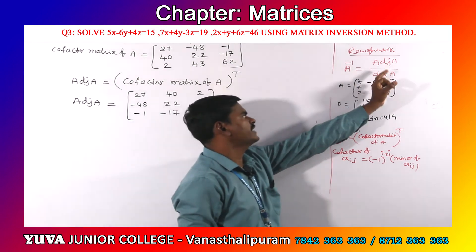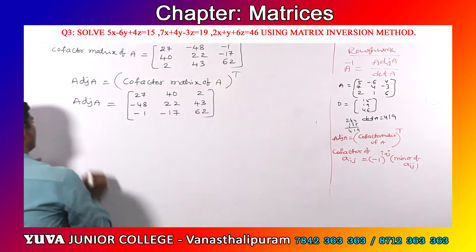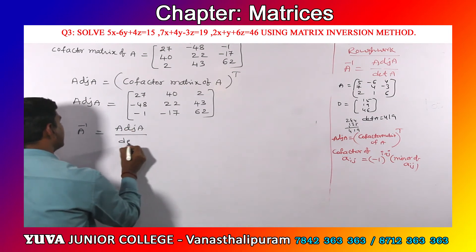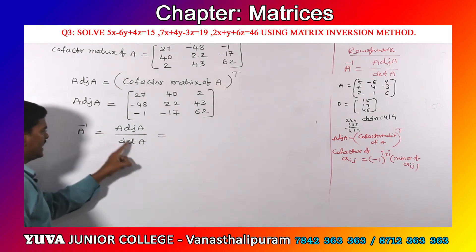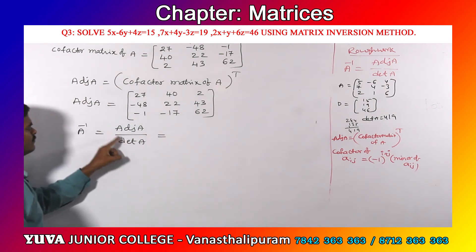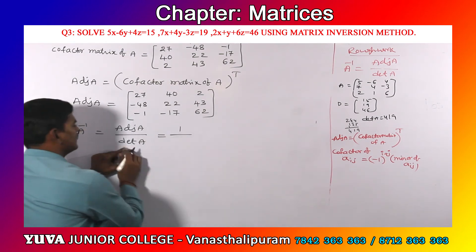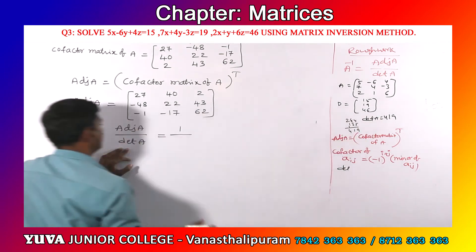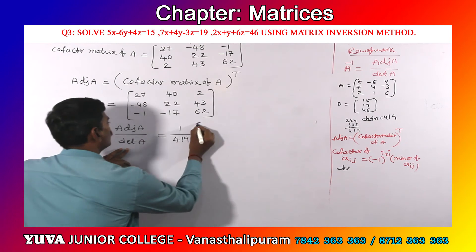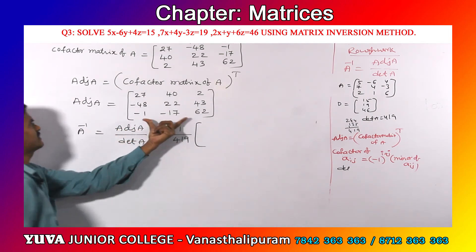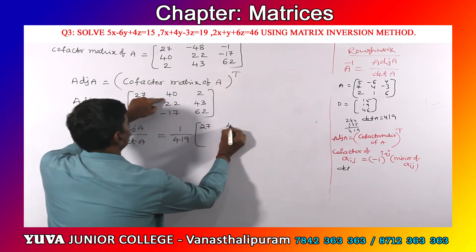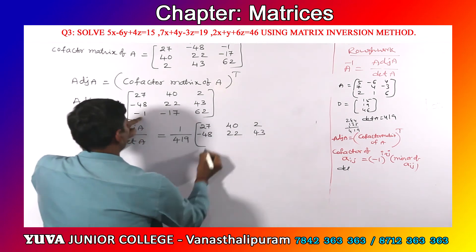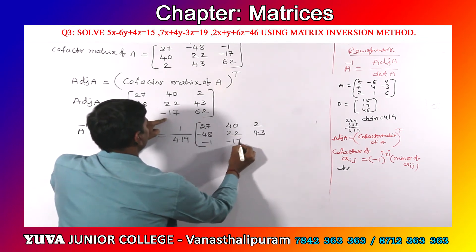After finding adjoint of A and det(A), we can write A inverse. A inverse formula is 1 by det(A) into adjoint of A. So A inverse equals 1 by 419 into the matrix [27, 40, 2; minus48, 22, 43; minus1, minus17, 62].